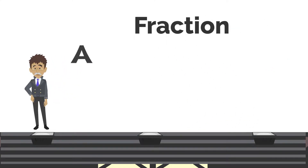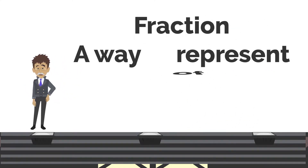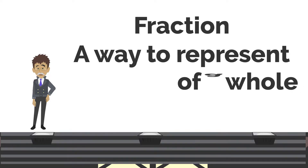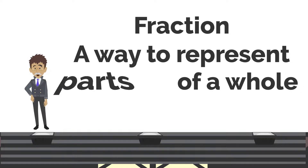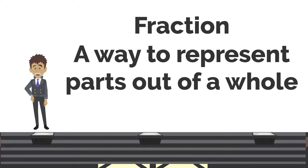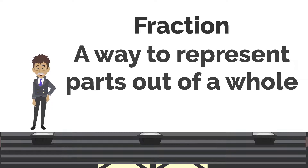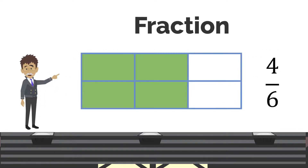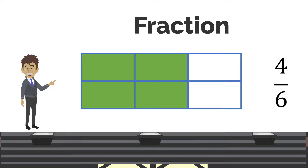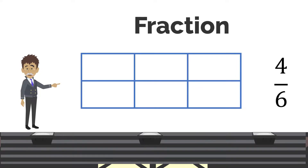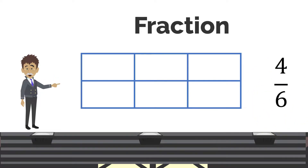First, a fraction is a way to represent the number of equally sized parts compared to the whole amount. The numerator is the number of equal sized parts with which you are working. The denominator is the number of the same sized pieces if the whole were divided up evenly.